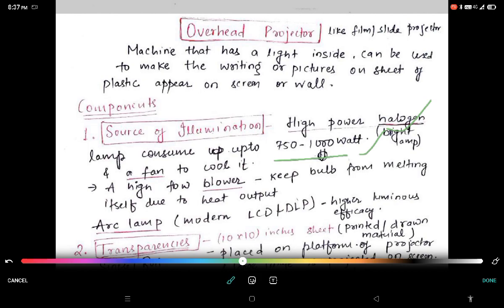Further, the intense heat usually causes the halogen lamp to fail quickly, often lasting less than 100 hours before failing and requiring replacement. In modern LCD or DLP, higher luminous efficacy lamp is used as compared to the halogen lamp.